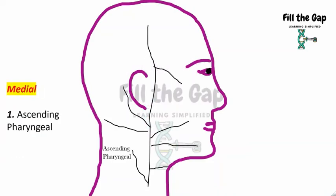Last but not least is the medial, which has ascending pharyngeal. So, since this is very important, because medially, there's only ascending pharyngeal present.